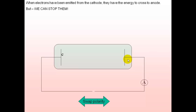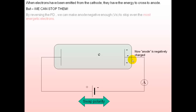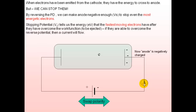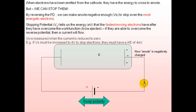To measure electron energy, we reverse the battery polarity, making the anode negative with respect to the cathode. The electron leaves but is repelled by the anode. By increasing this reverse potential — the stopping voltage — we can just stop even the most energetic electrons, at which point the photocurrent reaches zero.